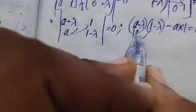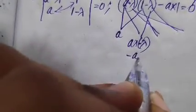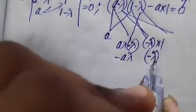Now let us find the determinant. It becomes (a minus lambda) multiplied by (1 minus lambda), minus the product of a times 1, equals 0. Expanding: a multiplied by 1 gives a; a multiplied by minus lambda gives minus a times lambda; minus lambda multiplied by 1 gives minus lambda.